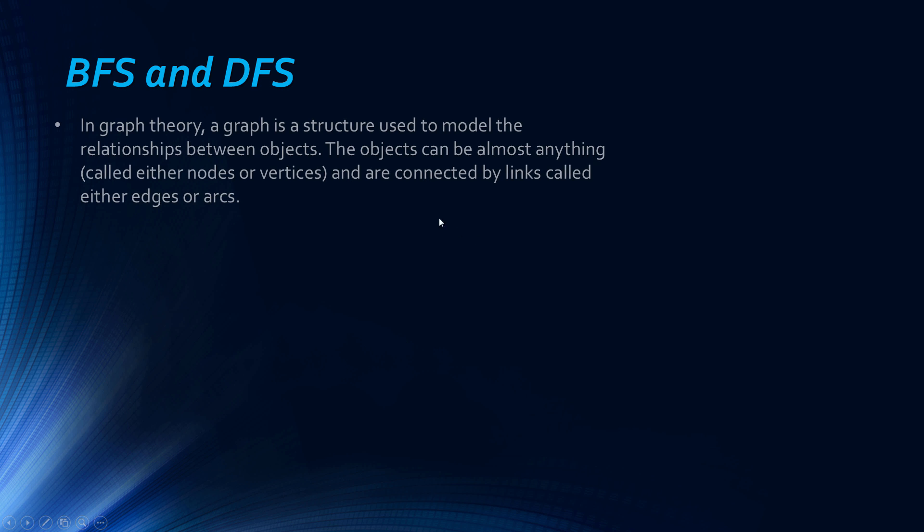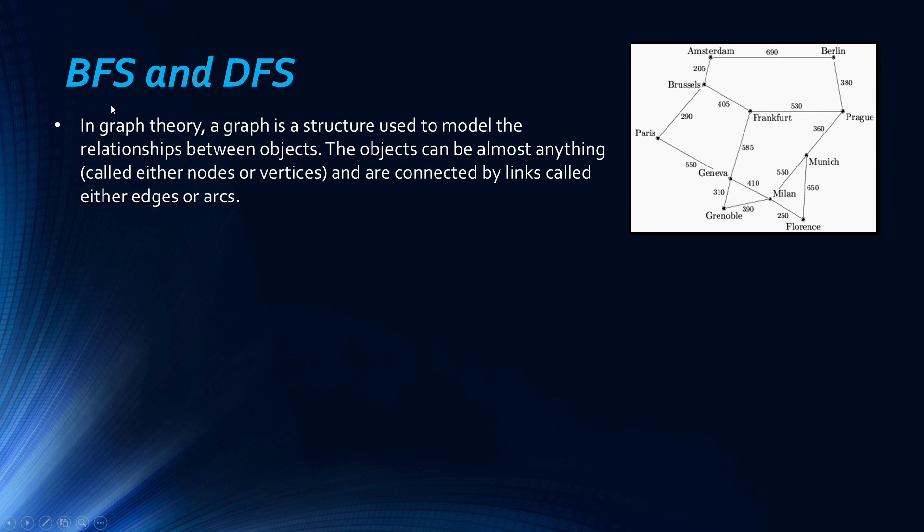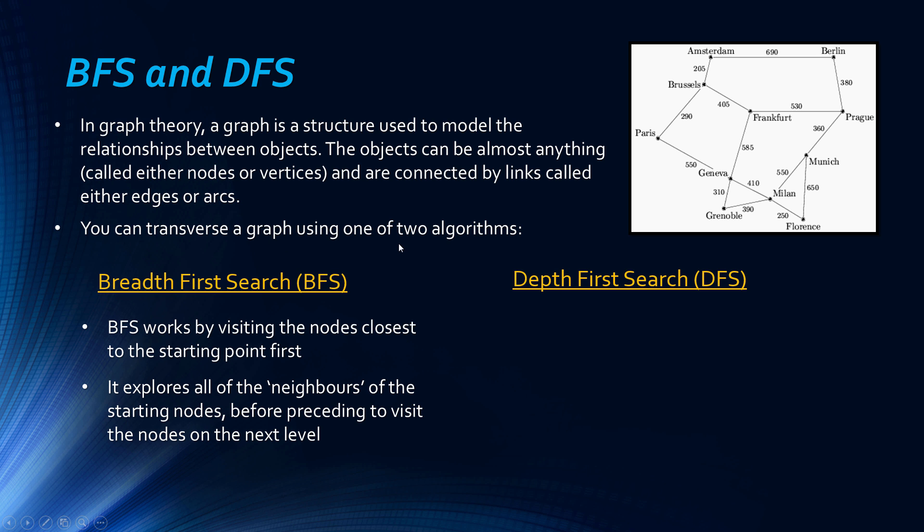Okay, moving on to look at something slightly different. We're still technically looking at search algorithms, but these are much more about traversing graphs in this case. So a graph, or we should say graph theory, is basically just an area of mathematics. And a graph itself is just a structure used to model relationships between objects. And the objects can be almost anything. So in this example of a graph, the objects are European cities, and the actual objects, so these dots here, they're usually either called nodes or vertices. And they're connected by the links, which are called either edges or arcs. And this is an example of something called a weighted graph, where numerical values are given to the distances between the nodes. And this is obviously modelling the region in Europe. But we need to look at two algorithms that can be used to traverse a graph.